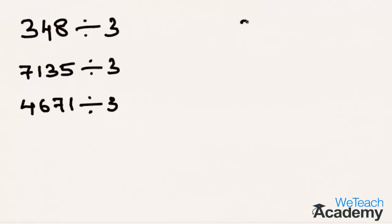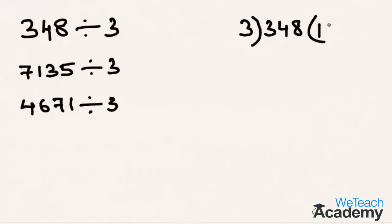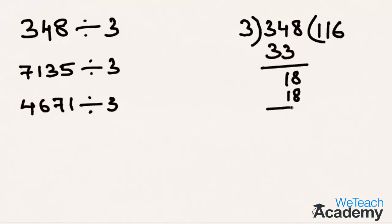Let us consider the first example — let us divide 348 by 3. Now 3 times 11 is 33, so 34 minus 33 is 1, and bringing down 8 we get 18. 3 times 6 is 18, and 18 minus 18 we get remainder as 0. Hence we can say that 348 is exactly divisible by 3.